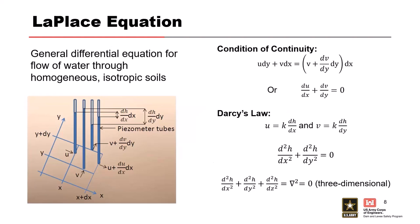The change in flow in the X direction plus the change in flow in the Y direction over the change in Y distance is equal to zero. When you apply Darcy's Law and plug it into the equation, you get this 2D differential equation. You can also extend that to three dimensions if you're looking at 3D seepage, which I don't recommend if you don't have a good reason to, because it's not fun.